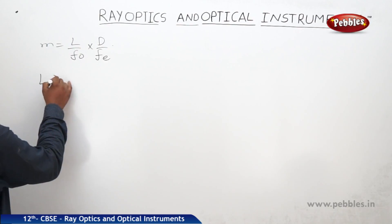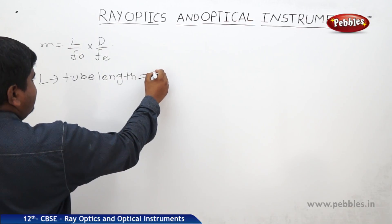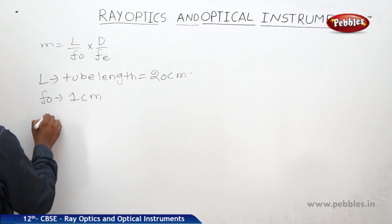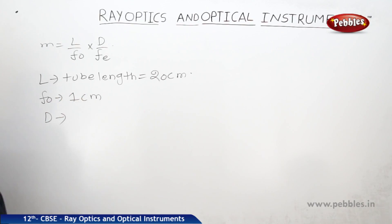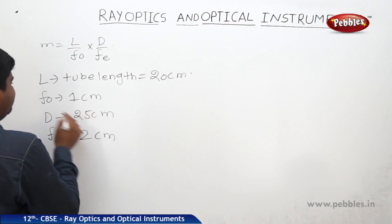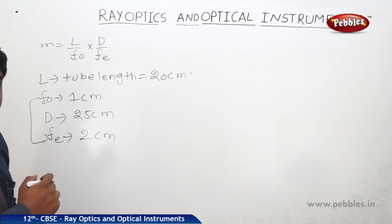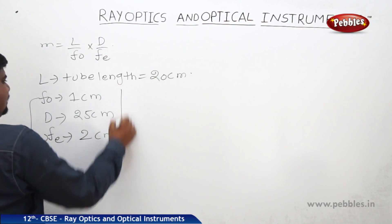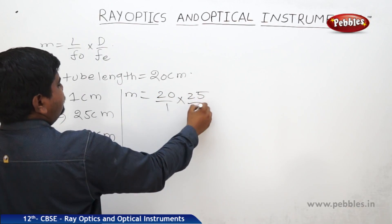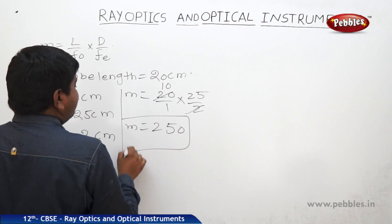So M0 is L/F0 and ME is D/FE. Here L is the tube length connecting the eyepiece and objective lens — let us say 20 centimetres. F0 is 1 centimetre. D, the least distance of distinct vision, is 25 centimetres. The eyepiece focal length is 2 centimetres. Substituting all these values: M = (20/1) × (25/2) = 250 times. So we will get a 250 times magnified image.